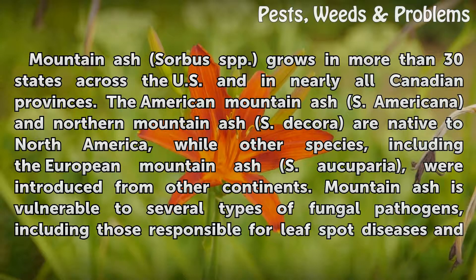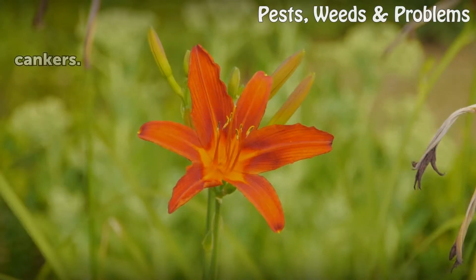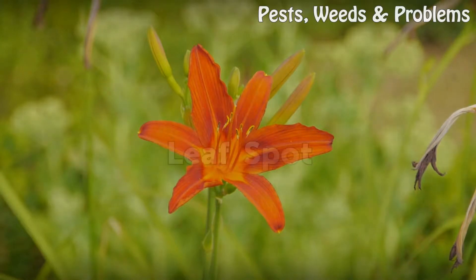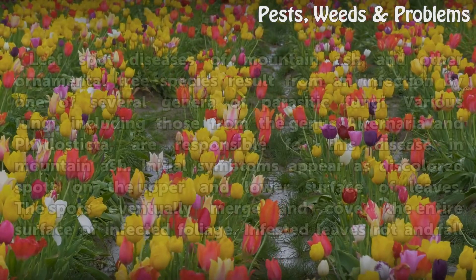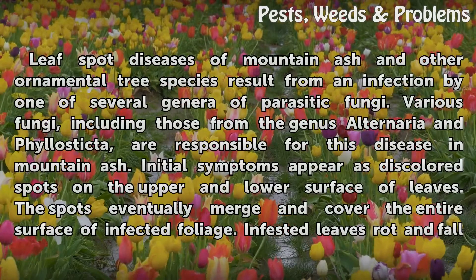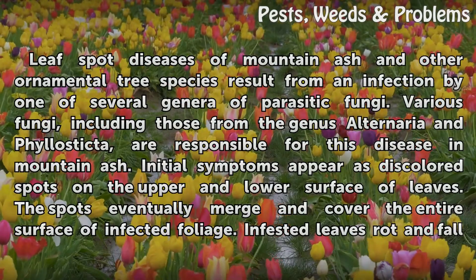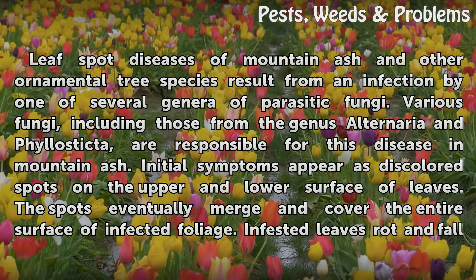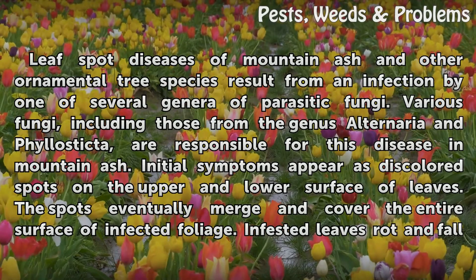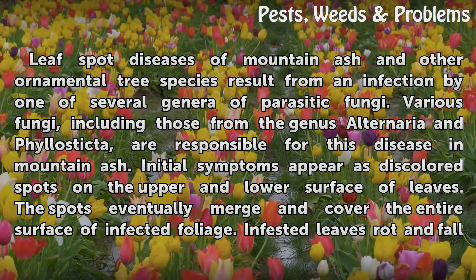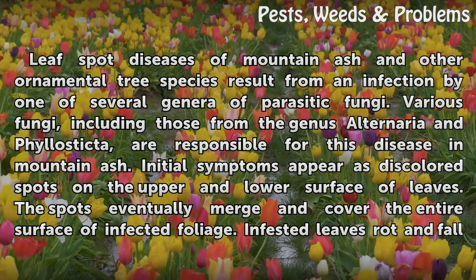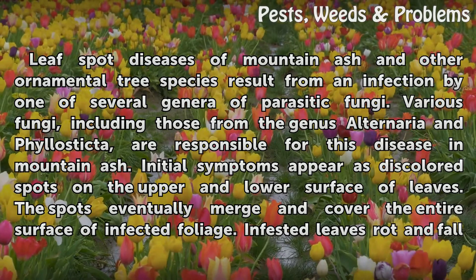Mountain Ash is vulnerable to several types of fungal pathogens, including those responsible for leaf spot diseases and cankers. Leaf spot diseases of Mountain Ash and other ornamental tree species result from infection by one of several genera of parasitic fungi. Various fungi, including those from the genus Alternaria and Phyllosticta, are responsible for this disease in Mountain Ash.